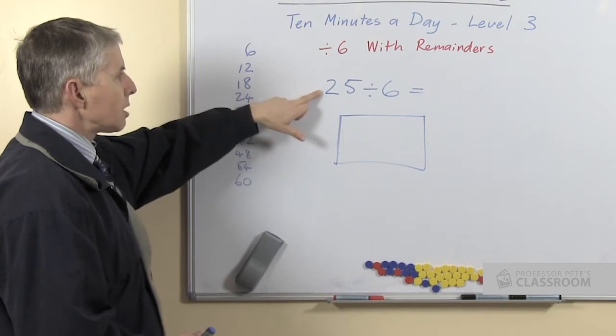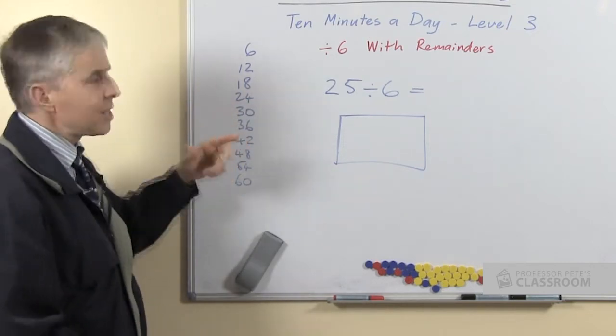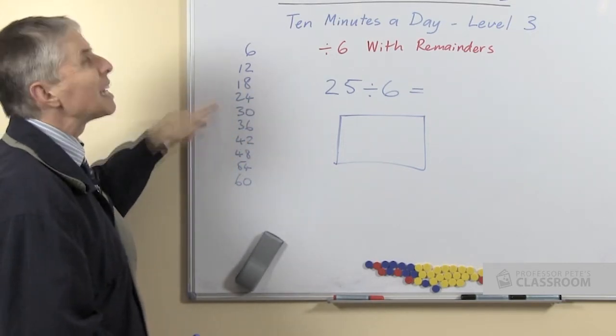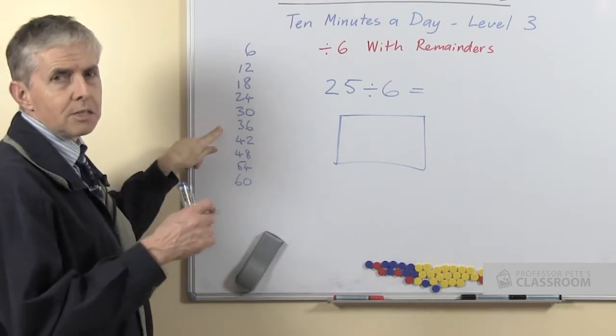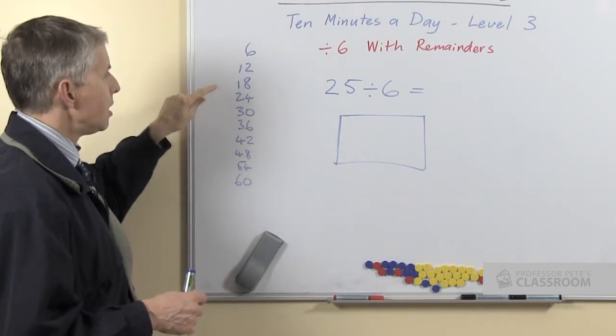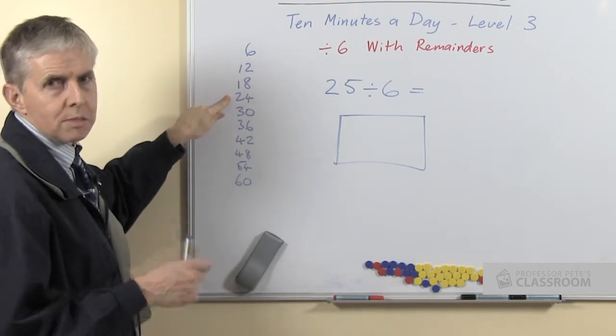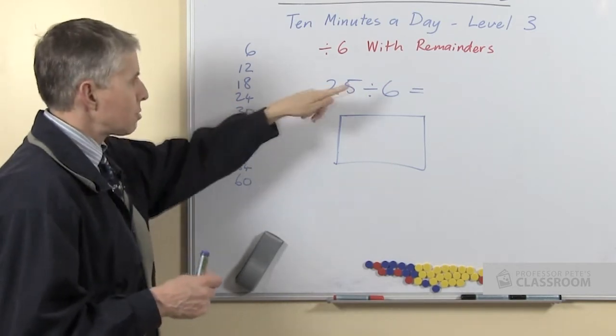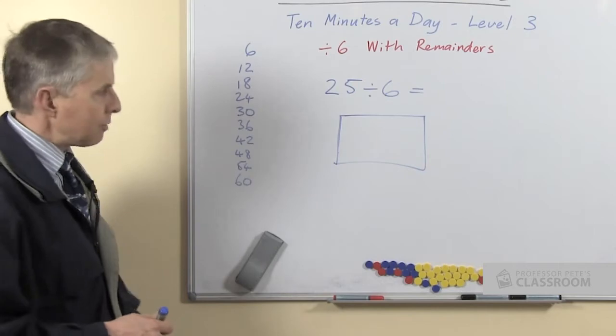So looking at a question like this, we want the students to be able to think to themselves, what is the biggest number in this list that's less than 25? Of course it's 24. Then remember that that is 4 times 6, then subtract that from 25 and there's 1 left.